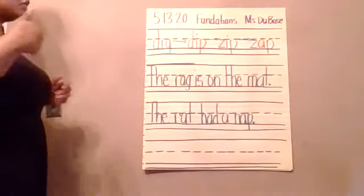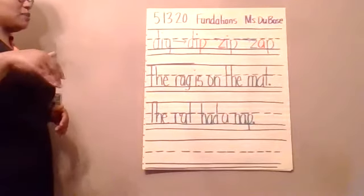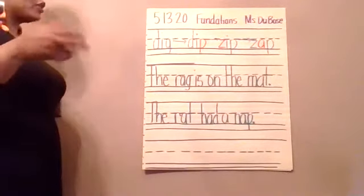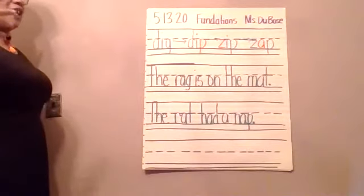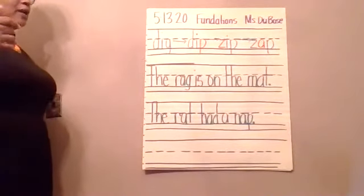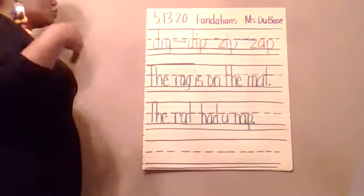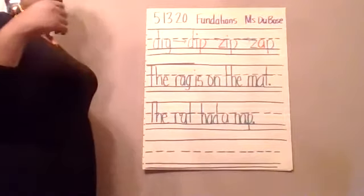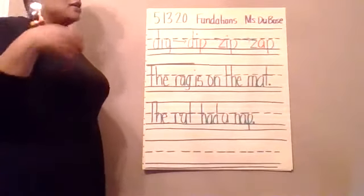If you notice the first word, the letters are all the same color. But as you go through the next three words, there's one letter that is not the same color. So our first word — I'm going to dictate it to you, friends, and you're going to write it.